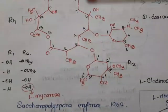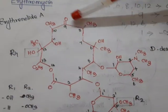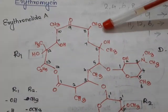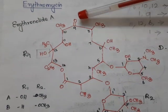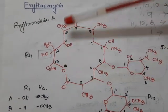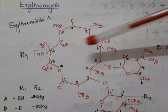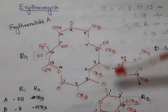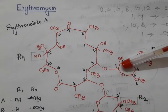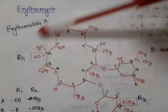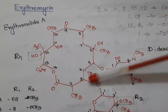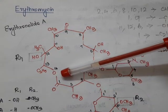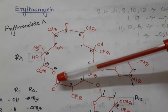Now we will see the structure of erythromycin. We have already seen that macrolides have three parts: a large macrocyclic lactone ring, a ketone group, and glycosidically linked amino sugars. Look at the structure of the lactone ring — the numbering starts from the ketone.